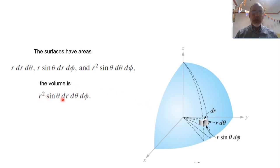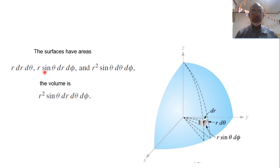This incremental volume r² sinθ dr dθ dφ has six faces. Looking at the three front faces: the first face is r² sinθ dθ dφ; the second face is r sinθ dr dφ; and the side face is r dr dθ. These are the faces of the incremental volume element in spherical coordinates.